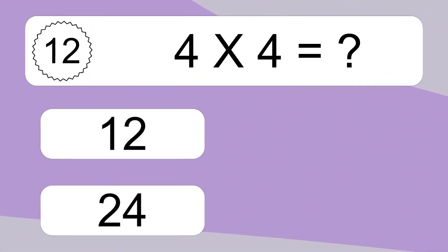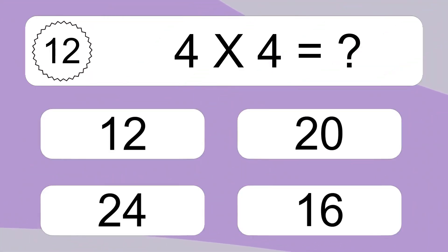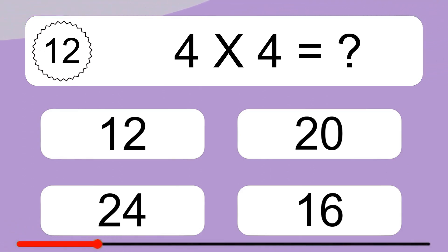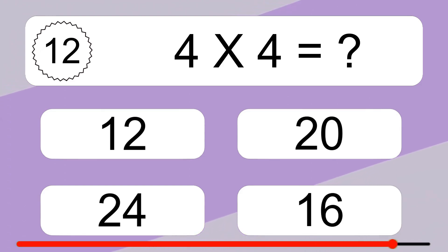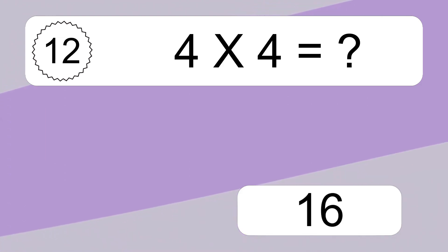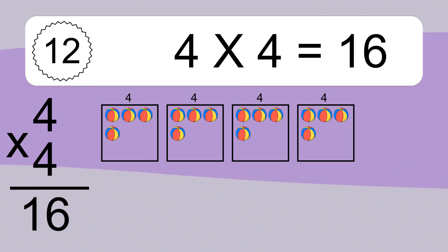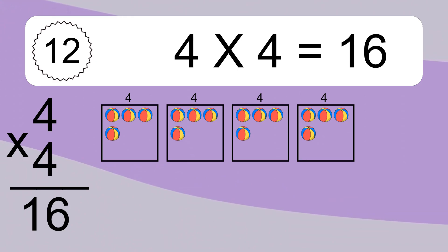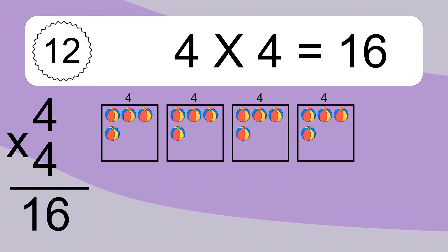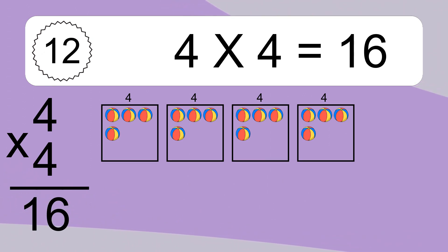4 times 4 equals 16. We have 4 boxes, and each box has 4 colorful balls inside. 4 times 4 equals 16. We have 4 times 4 balls. This equals 16 balls.